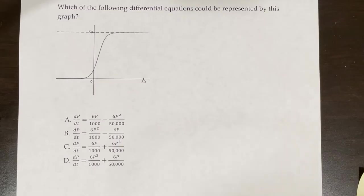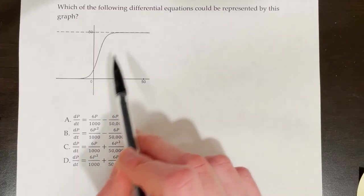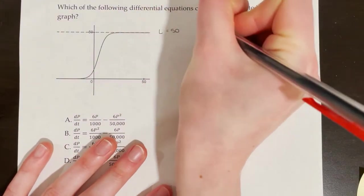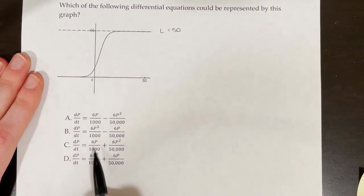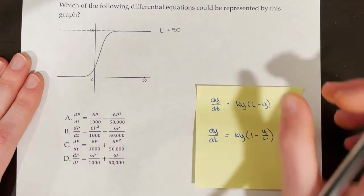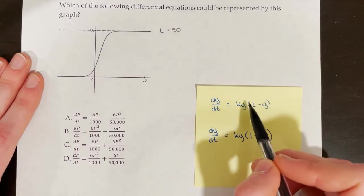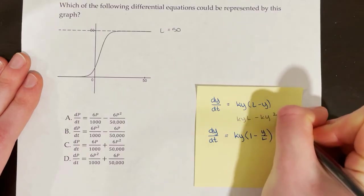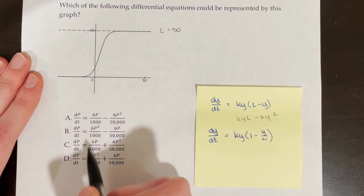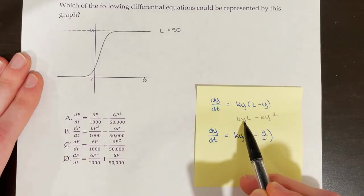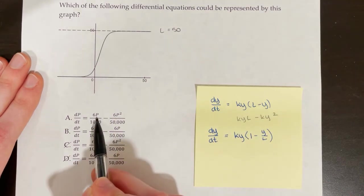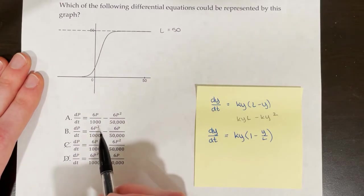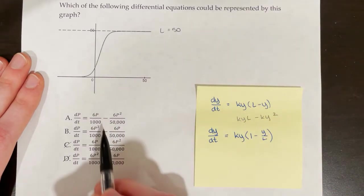Which of the following differential equations could be represented by this graph? I see a logistic S-shaped curve leveling off at a carrying capacity of 50, so L equals 50. If I distribute ky times (L minus y), I get kyL minus ky squared, so I'm looking for a positive single y term minus a y squared term. This eliminates choices C and D. I tentatively think it's choice A.